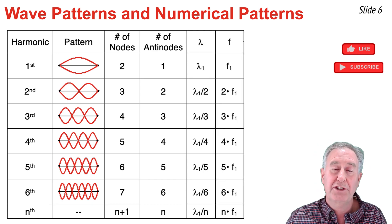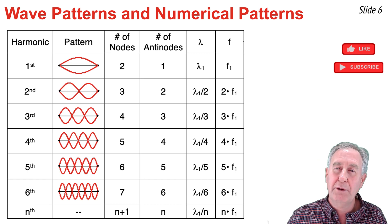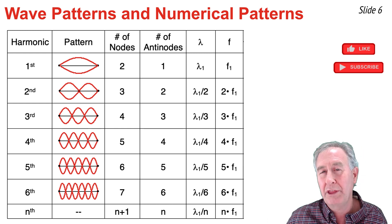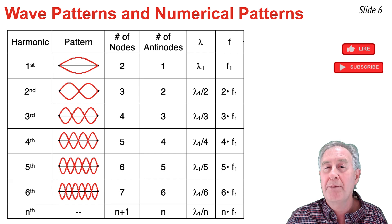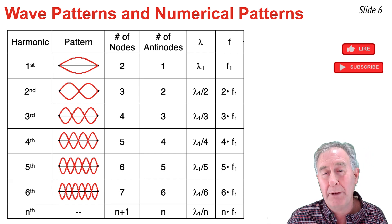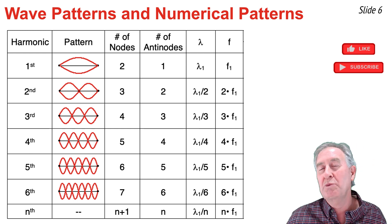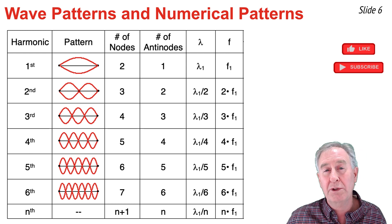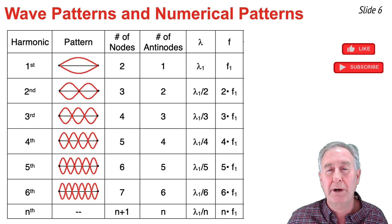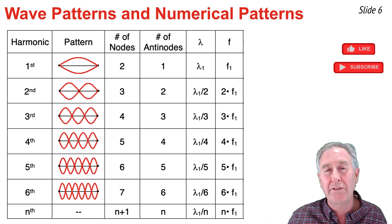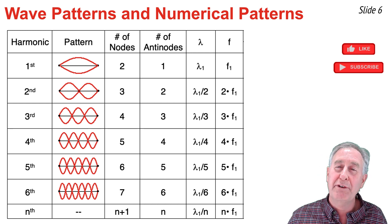We also noticed clear relationships between the wavelengths and frequencies of the various harmonics. For the second harmonic, its wavelength is one-half of the first; for the third harmonic, the wavelength is one-third of the first. So for the fourth, fifth, and sixth harmonics, we would expect to find the wavelength by taking the first harmonic's wavelength and dividing by four, five, and six respectively, as shown in the table. For frequencies, the second and third harmonic had frequencies two and three times larger than the first harmonic's frequency, so the fourth, fifth, and sixth harmonics would have frequencies four, five, and six times larger than the first harmonic.